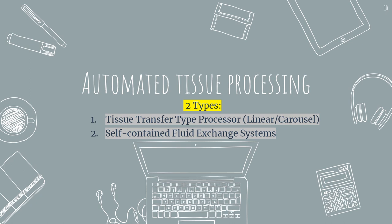There are two types of automated tissue processing. First is the tissue transfer type processor — linear or carousel. Second is the self-contained fluid exchange system. The basic principle for tissue processing requires the exchange of fluids using a series of solutions for a predetermined length of time in a controlled environment. In the machine, it is electronically timed and then fluids are exchanged.